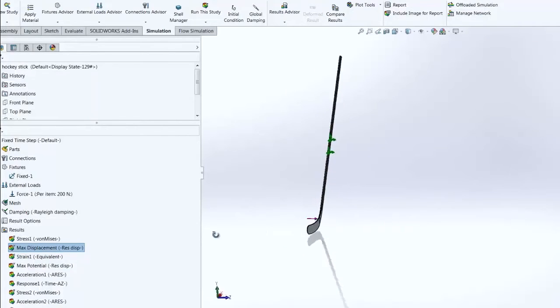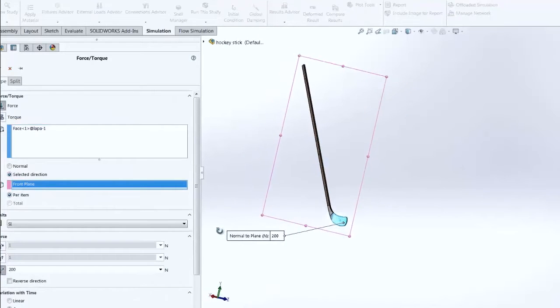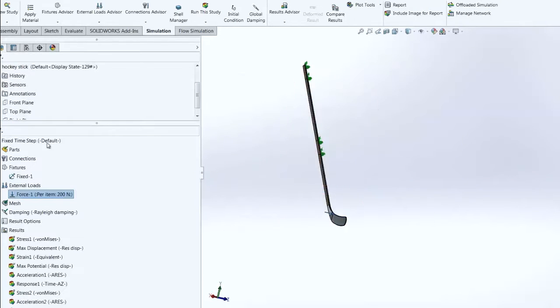To test the hockey stick, we used nonlinear simulation. We fixed it to locations where the player's hands will be and then put a force onto the bottom to simulate striking the ground. This force uses a nonlinear curve so that it will release very suddenly, just as it will in real life.